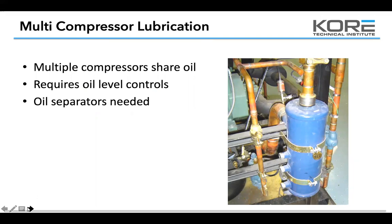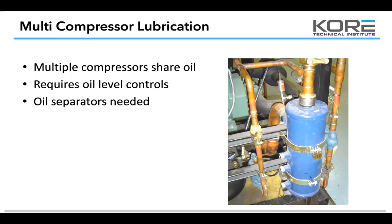For multiple compressor lubrication you're going to need that separator, the oil reservoir, and those step-down valves to drop the pressure from discharge pressure down to 30 pounds above suction pressure so it feeds nicely into those compressors. It also requires oil level controls and a float at the compressor. If you're not using a float, you're probably using something like a Traccs oil module or Alco — an electronic module with a sensor inside the float. As the oil level drops in the compressor, the solenoid valve opens and allows oil to feed in until the float comes up and satisfies. If it doesn't fill up within a certain time, it alarms out and locks the compressor out.